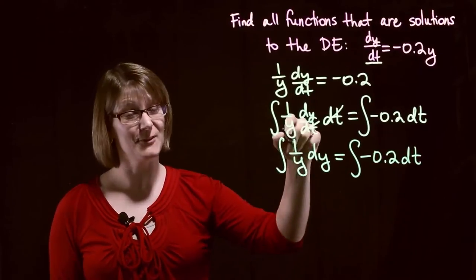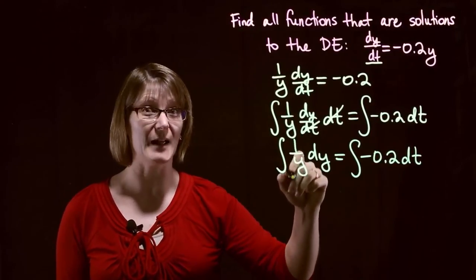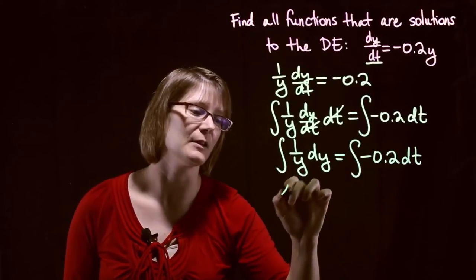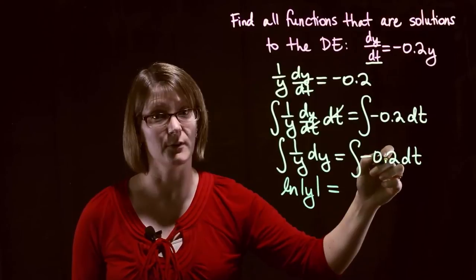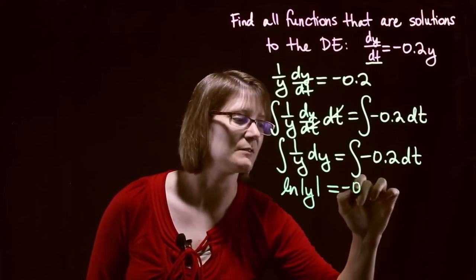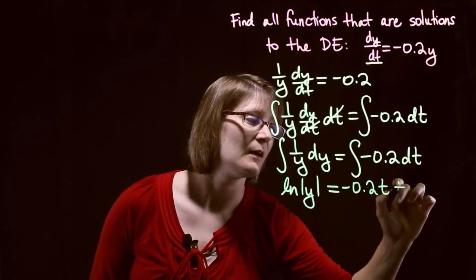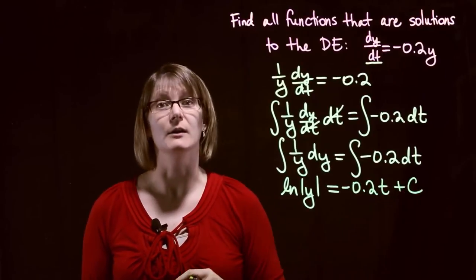So hopefully these are functions you know how to integrate. 1 over y, the integral or the antiderivative is the natural log of y. And then on the right-hand side, the antiderivative of just a constant is going to be negative 0.2t, and then plus an extra constant we're going to call c.